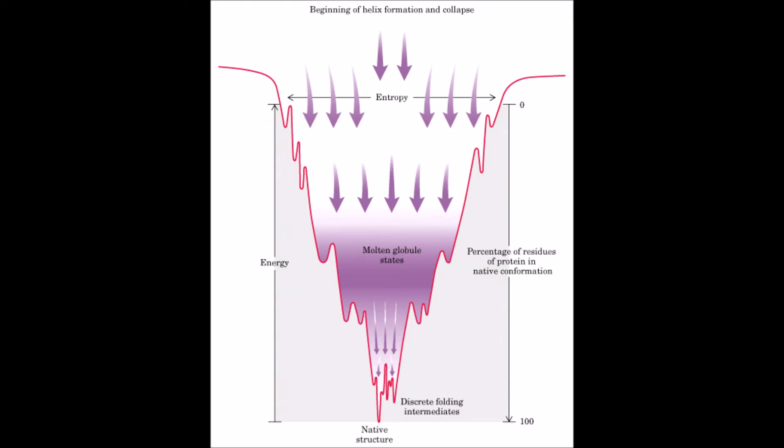Each protein normally folds into a single stable conformation. This conformation, however, often changes slightly when the protein interacts with other molecules in the cell. This change in shape is crucial to the function of the protein. When proteins fold incorrectly, they sometimes form aggregates that can damage cells and even whole tissues.